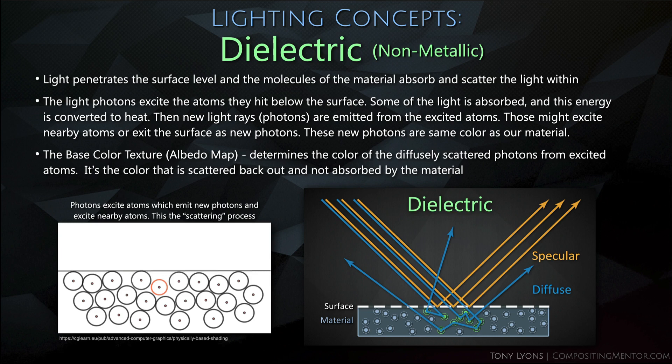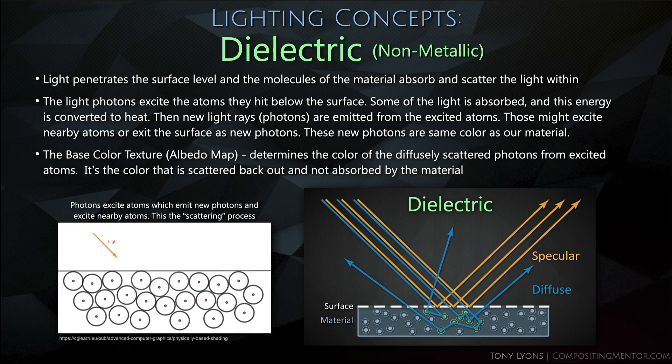With a dielectric material, the light penetrates the surface level and the molecules absorb and scatter the light within. Scientifically, light photons excite the atoms below the surface. Some light is absorbed and converted into heat. New photons are emitted from the excited atoms, which might excite nearby atoms or exit the surface. These new photons are the color of our material — the light that hits our eyes. So for a dielectric, the base color texture or albedo map determines the color of the diffusely scattered photons. It's the color scattered back out, not the one absorbed.